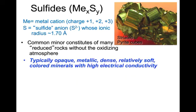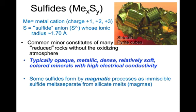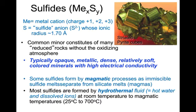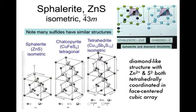Commonly, sulfides occur as minor rock-forming minerals in reduced rocks that have not been in contact with the atmosphere. Typically, sulfides are opaque, metallic, dense, relatively soft, and highly colored, and they have high electrical conductivity. Some sulfides are formed by magmatic processes, where sulfide melts separate from silicate magmas. Most sulfides are formed by hydrothermal fluids — that is, hot water and dissolved ions — at temperatures ranging from room temperature to magmatic temperatures. Sulfides typically have fairly simple crystal structures; many are isometric or tetragonal.